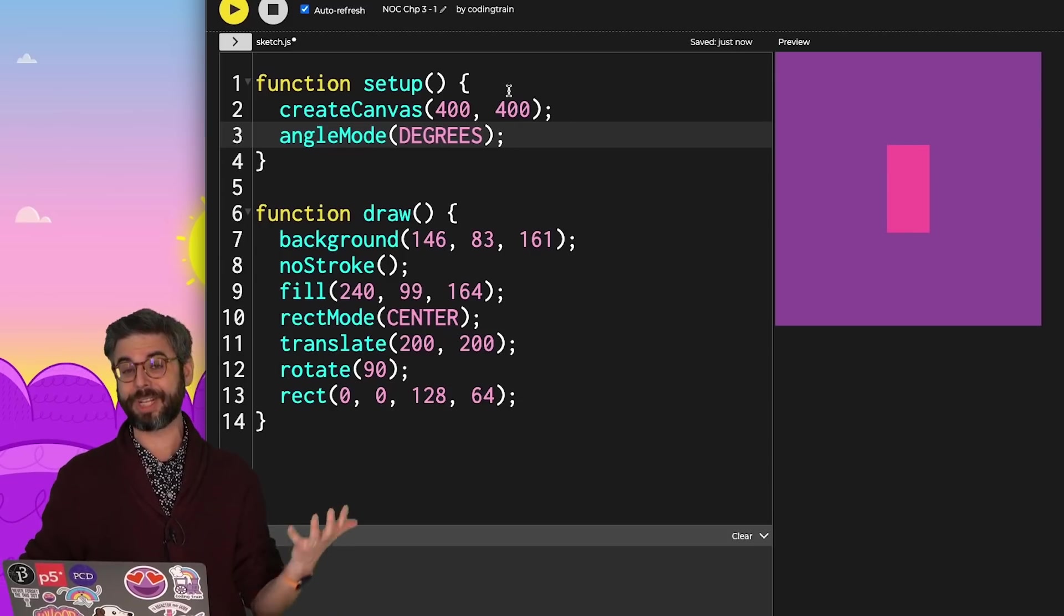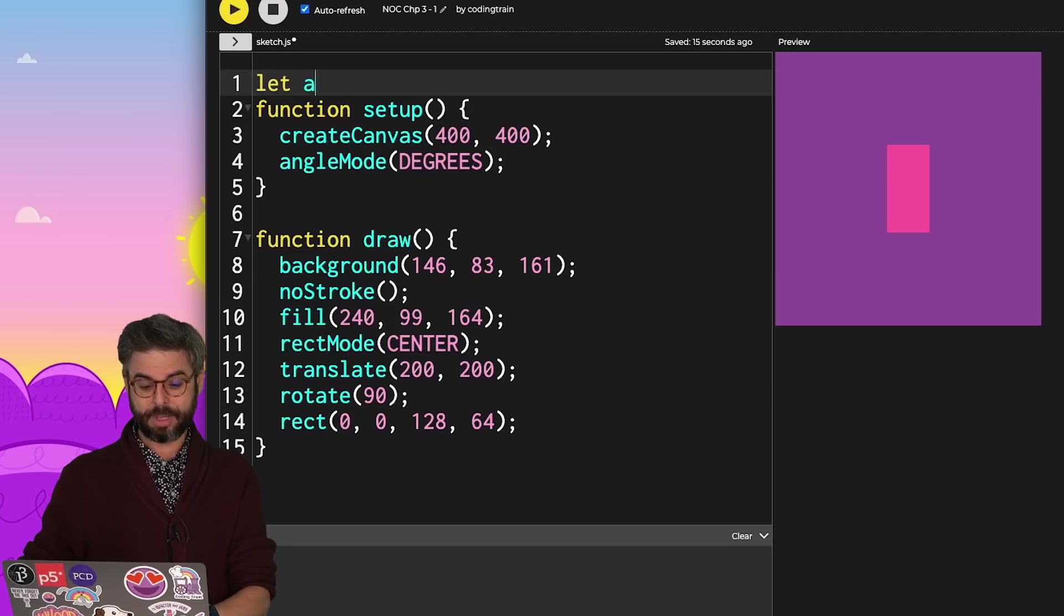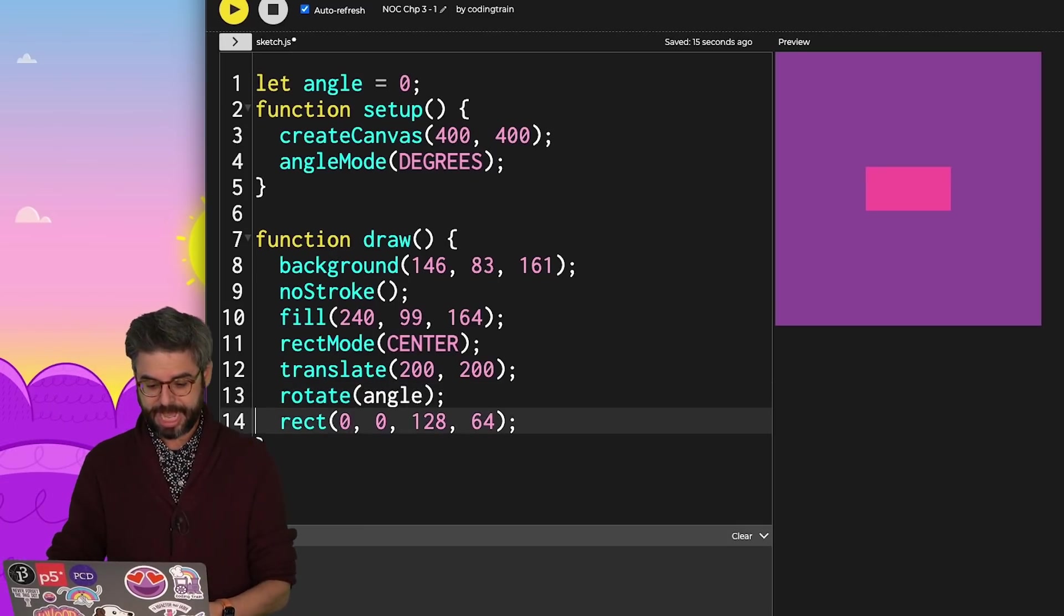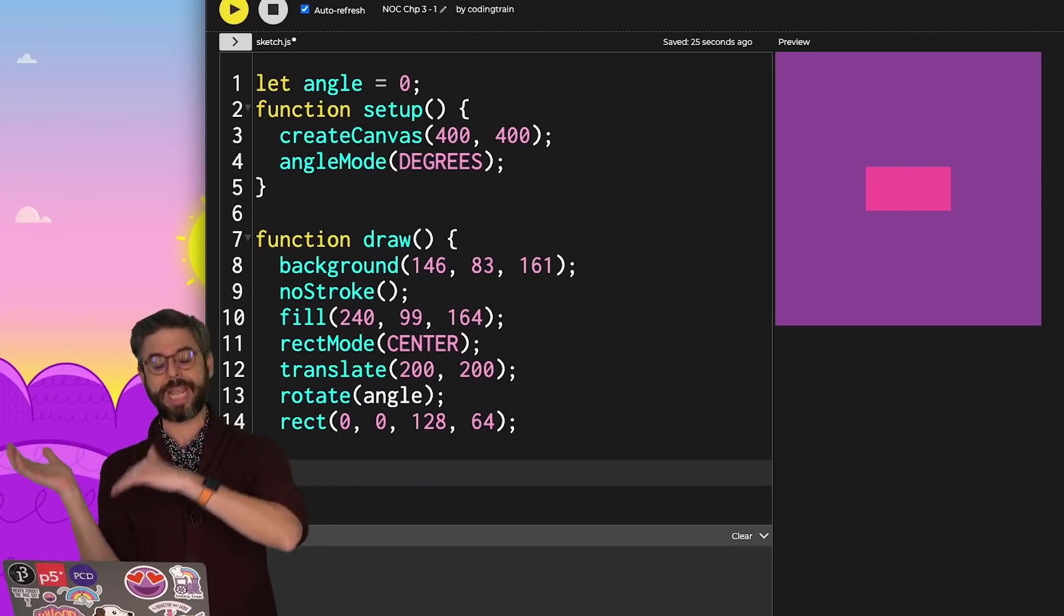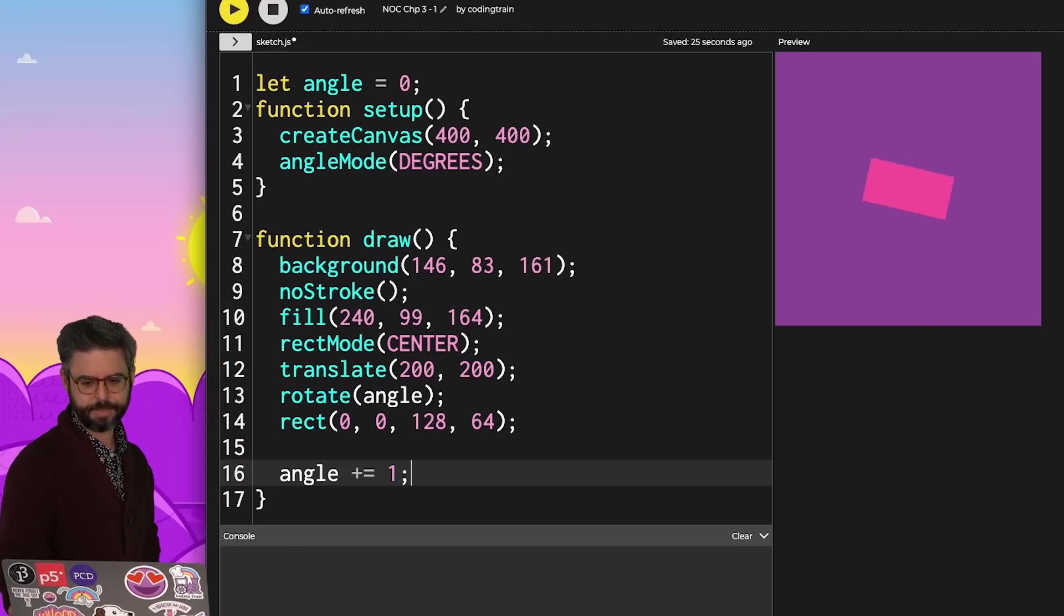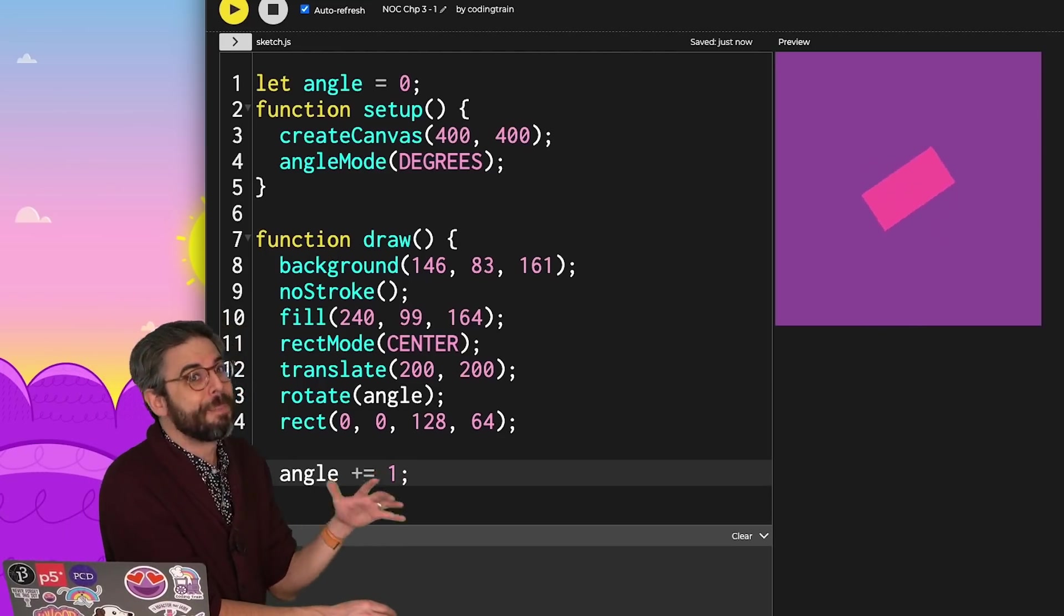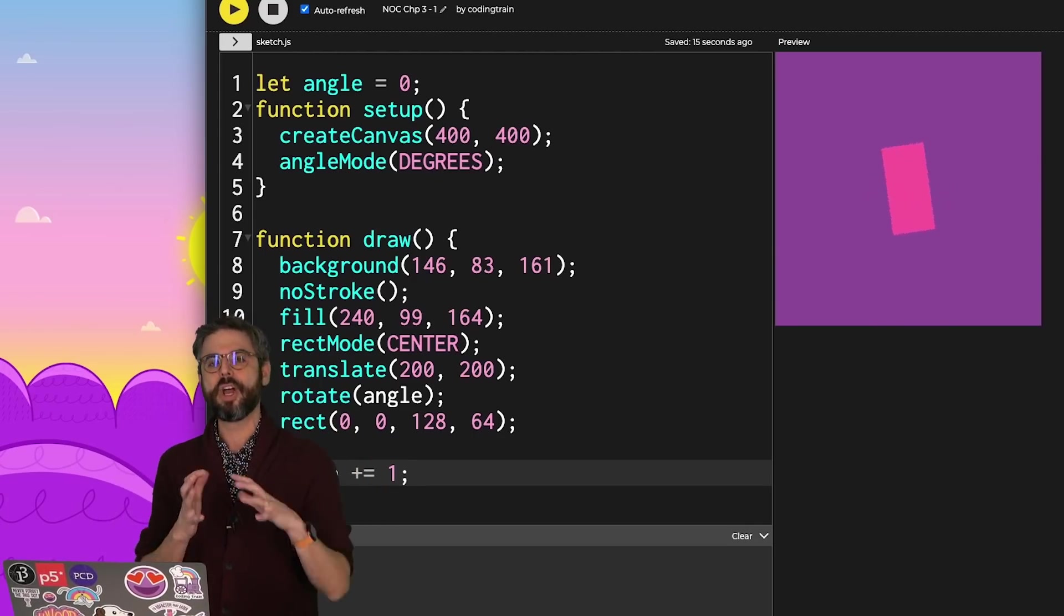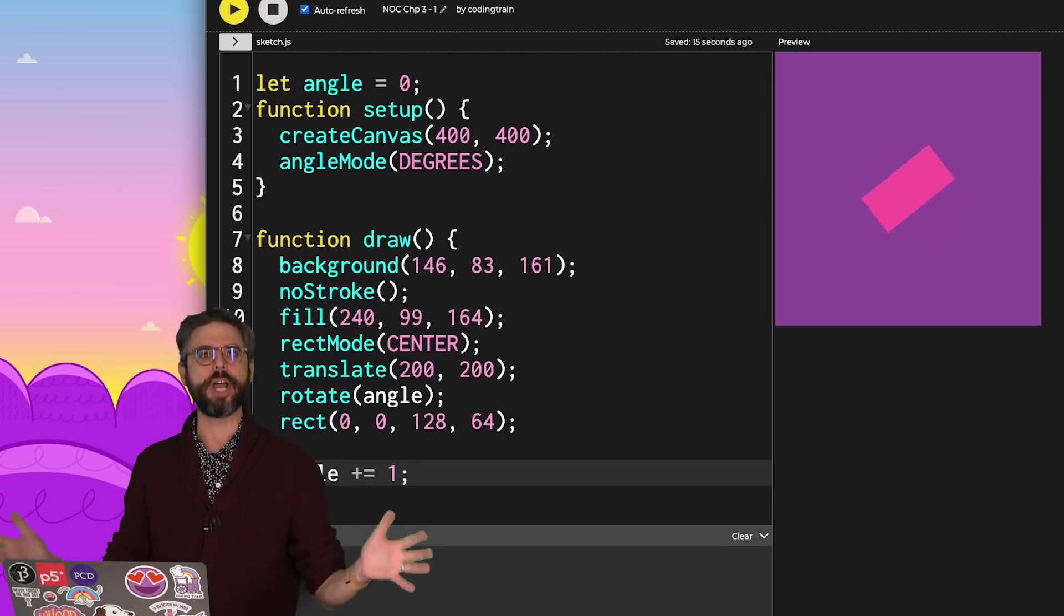And once I've done that, you can see I now have this rectangle rotated perfectly by 90 degrees. And there might be some reasons to do this. I can think of actually a really convenient reason to do this right now. What if I were to make a variable called angle, set it to 0, put angle inside of the rotate function, and then say, OK, every frame, 30 frames per second, I want to rotate one degree. Now I have a spinning rectangle.